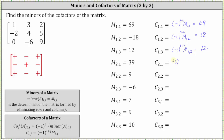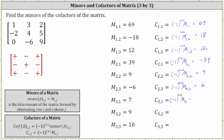Cofactor two comma one is equal to negative one raised to the power of two plus one, times minor two comma one. The cube of negative one is negative one, and minor two comma one is 39. Negative one times 39 is negative 39. Cofactor two comma two is equal to negative one raised to the power of two plus two times minor two comma two, which gives us positive one times nine, which is nine. Cofactor two comma three is equal to negative one raised to the power of two plus three times minor two comma three. The fifth power of negative one is negative one, and minor two comma three is negative six. Negative one times negative six is positive six. Cofactor three comma one is equal to negative one raised to the power of three plus one times minor three comma one, which is the fourth power of negative one, which is one, and minor three comma one is seven. One times seven is seven.